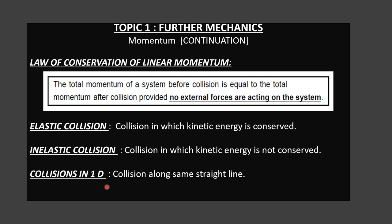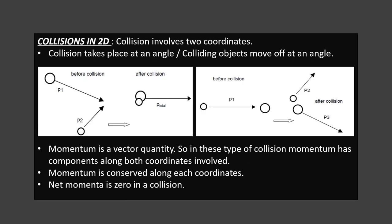But in today's class, we are going to see collisions in two dimensions. Collisions in 2D involve two particles. The two most common categories are: either the collision takes place at an angle, or the colliding objects move off at an angle.